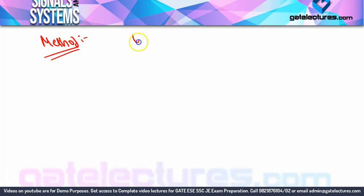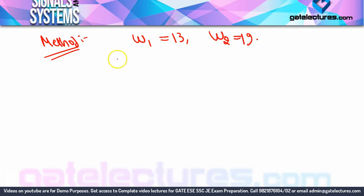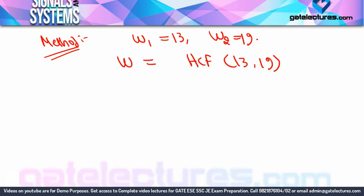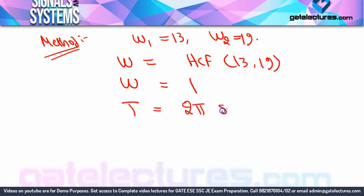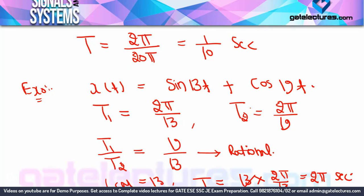Using Method 2 for this example: ω₁ = 13, ω₂ = 19. Overall omega = HCF(13, 19) / LCM(1,1). The denominators are both 1 so LCM = 1. HCF of 13 and 19: only 1 is common. So overall ω = 1. Time period = 2π/1 = 2π seconds - same answer as Method 1, confirming both methods are consistent.